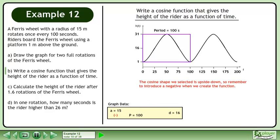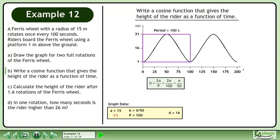The cosine shape we selected is upside down, so remember to introduce a negative when we create the function. The B value is pi over 50. The C value is 0.